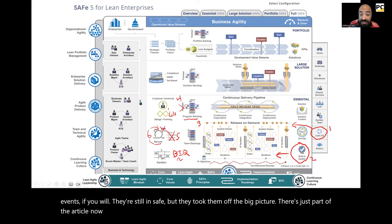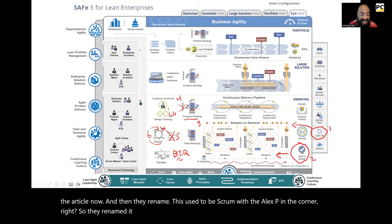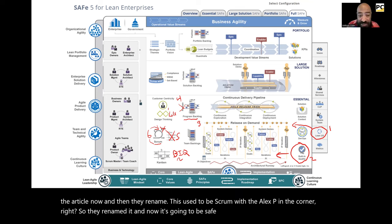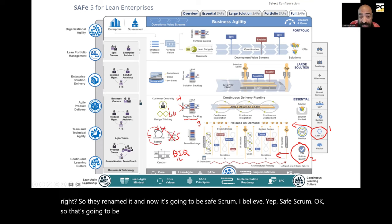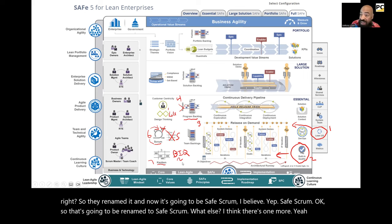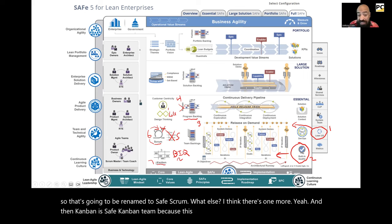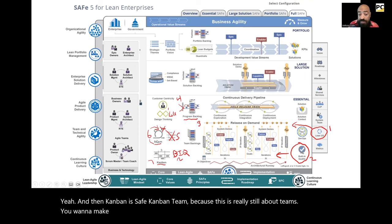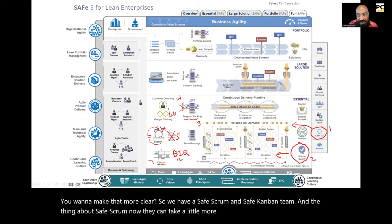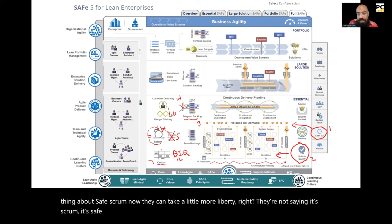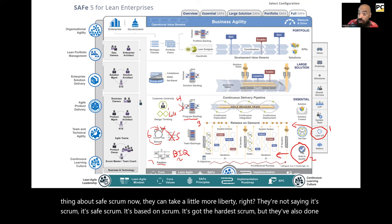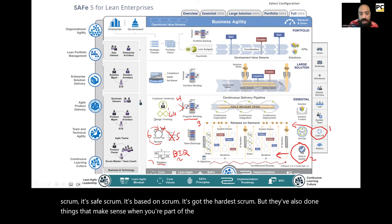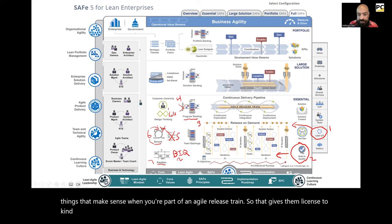These four little elements — plan, execute, review, retro — are the Scrum events. They're still in SAFe, but they took them off the big picture; they're just part of the article now. And they renamed what used to be 'Scrum with LXP in the corner' to 'SAFe Scrum.' And Kanban is now 'SAFe Team Kanban,' because this is still about teams. The thing about SAFe Scrum is now they can take a little more liberty — it's not saying it's Scrum, it's SAFe Scrum, based on scrum but tweaked to make sense when you're part of an Agile Release Train.